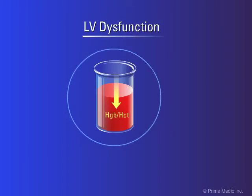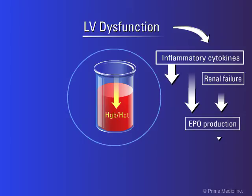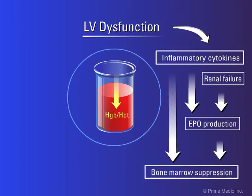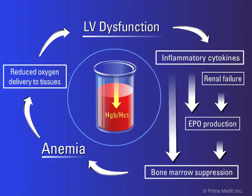The reduced oxygen-carrying capacity is compensated by an increased sympathetic neuronal activity. In chronic anemia, the sympathetic activation becomes maladaptive, contributing further to left ventricular dysfunction. Increasingly impaired tissue perfusion amplifies these processes. All three elements of the cardiorenal anemia syndrome progress with further amplification to states of increasingly impaired function.